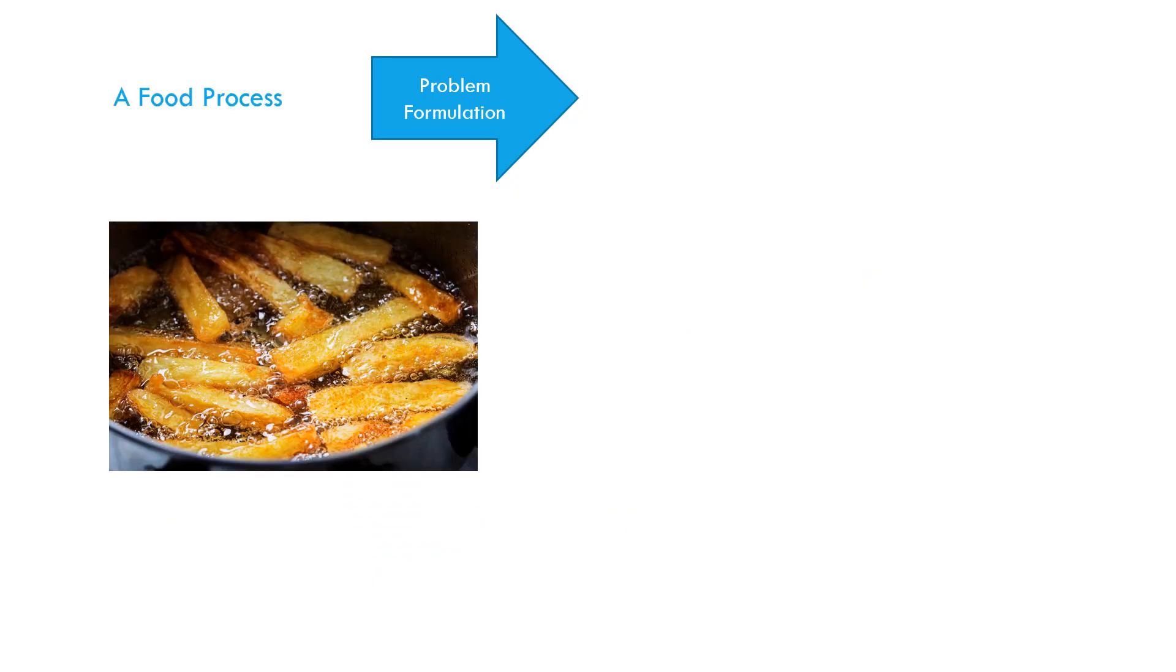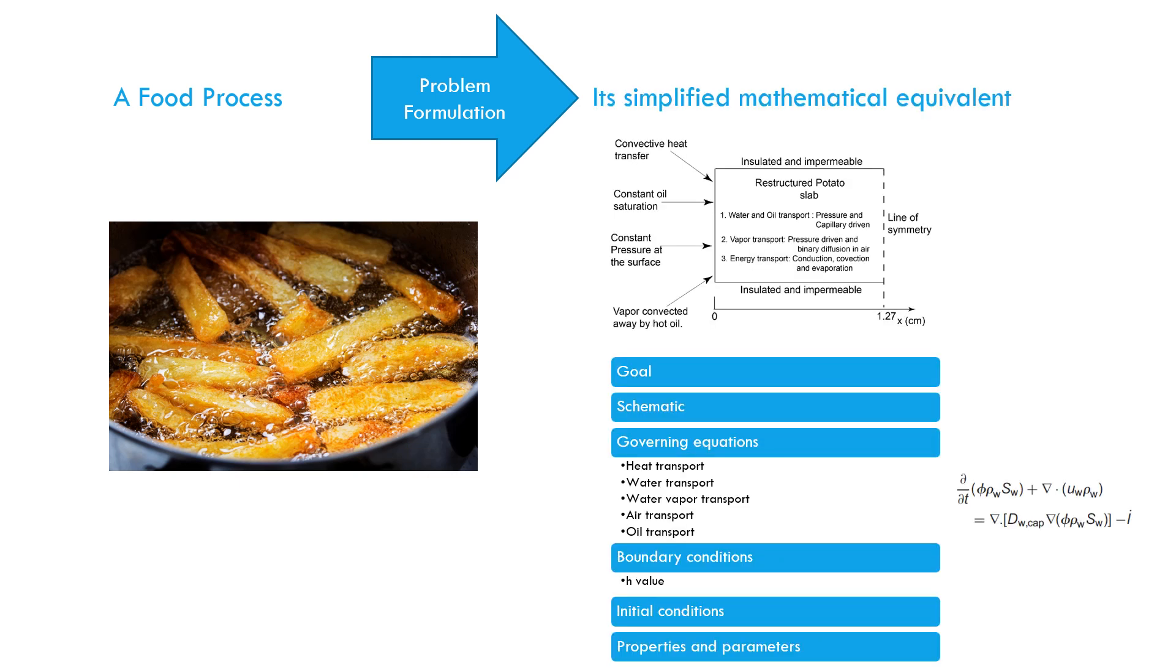Here is an example of problem formulation where the real physical process is replaced by its mathematical equivalent consisting of goals, schematic, governing equations, boundary conditions, initial conditions, properties and parameters. All of these are discussed in great details in a separate video on problem formulation.